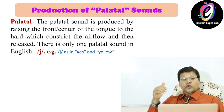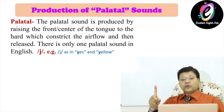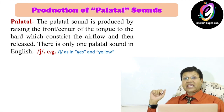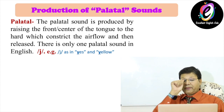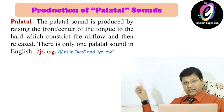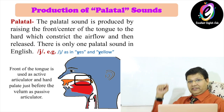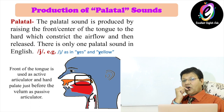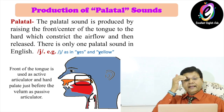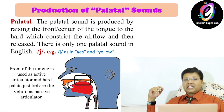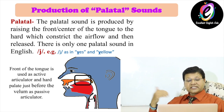Number six: production of palatal sound. The palatal sound is produced by raising the front or center of the tongue to the hard palate, which constricts the airflow and is then released. There is only one palatal sound in English — /j/ as in 'yes' and 'yellow'. The center part of the tongue touches the roof of our mouth, the hard palate. In the picture you will see the front of the tongue approaches the hard palate. The front of the tongue is the active articulator and the hard palate is the passive articulator.